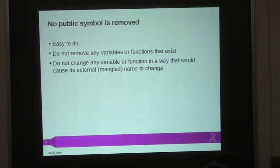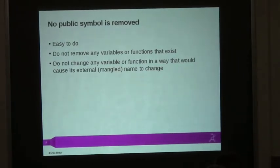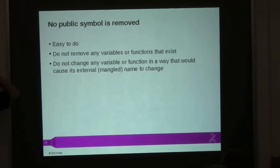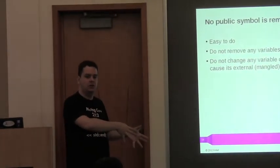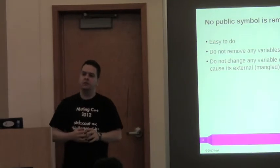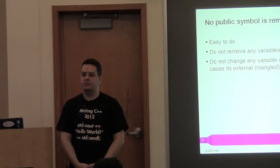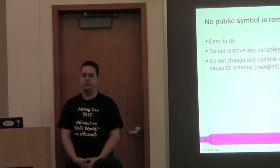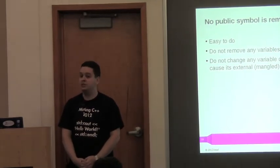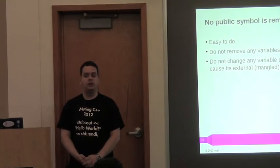No public symbols removed — that's more or less easy to verify by getting a dump of the symbol listing and checking you're not removing any functions or variables. If you're using export control, ceasing to export what was exported counts as removing. Be careful: sometimes changing a function changes its external mangled name, which is equivalent to removing the old symbol — the old name ceases to exist. The question of whether this can be automated: yes, there are tools, but automate as much as you can while not expecting tools to find everything — they will have false positives and false negatives.